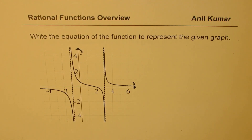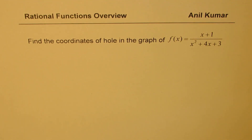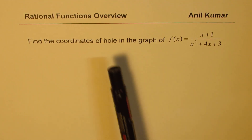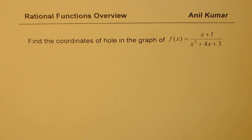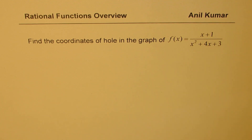In question number three, we are given the graph of the function and we have to find the equation from the given graph — based on the vertical asymptotes and x and y intercepts. The last question focuses on how to figure out the hole for the given rational function. A hole occurs when we have a common factor in numerator and denominator. So let's begin with question number one.